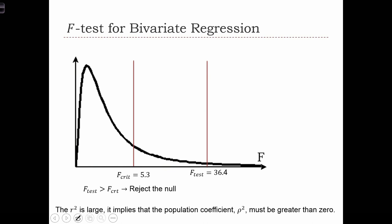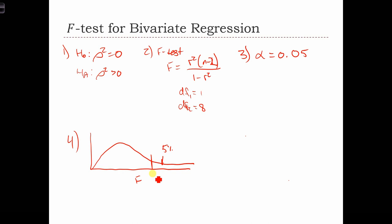I believe I've produced this already. So based on our F table at the back of the book, we can find the critical value is 5.3. So the critical value here is 5.3.